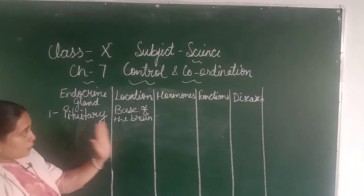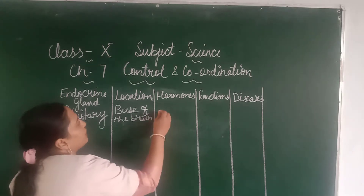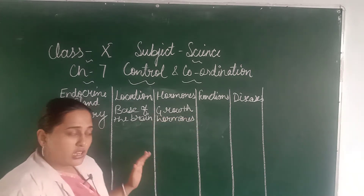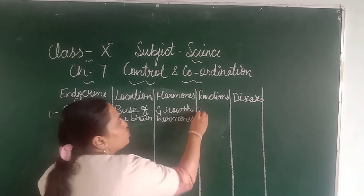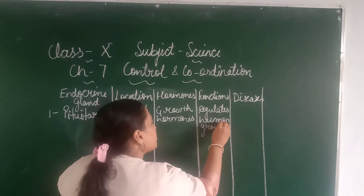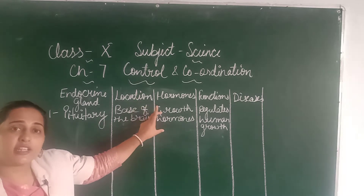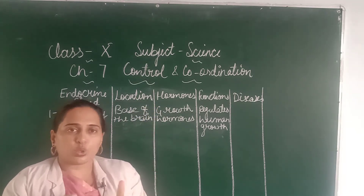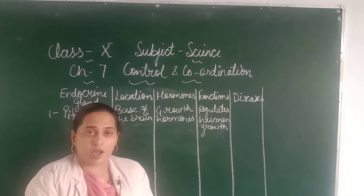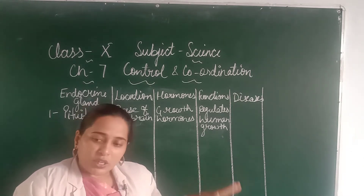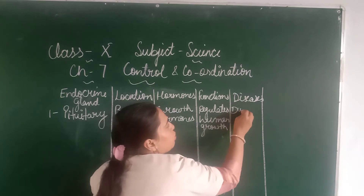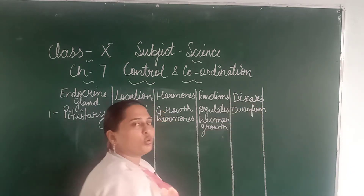The pituitary gland secretes many hormones, but the most important one here is the growth hormone. The function of growth hormone is that it regulates human growth. If it is secreted in a small amount by the pituitary gland, the person becomes too short — that condition is known as dwarfism, where the person is very small in size.